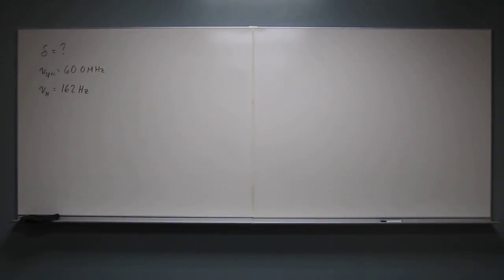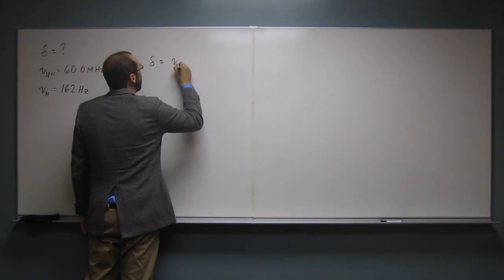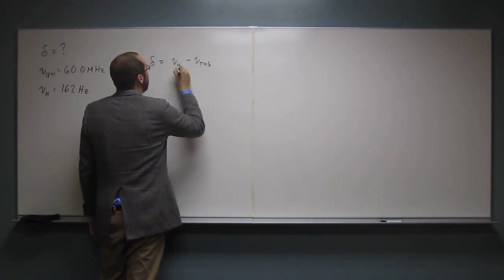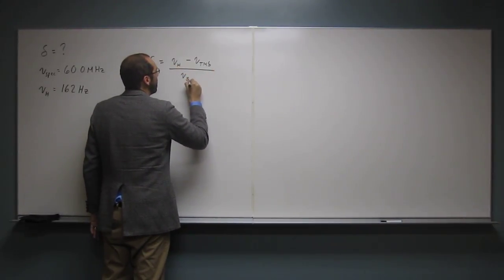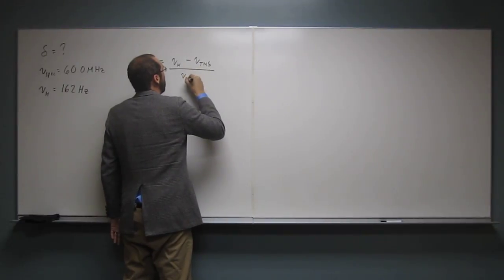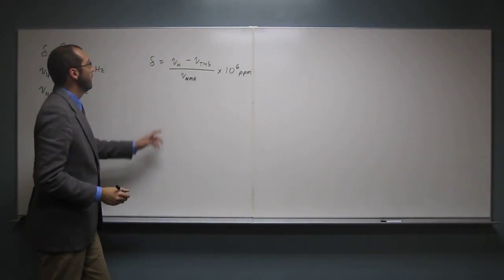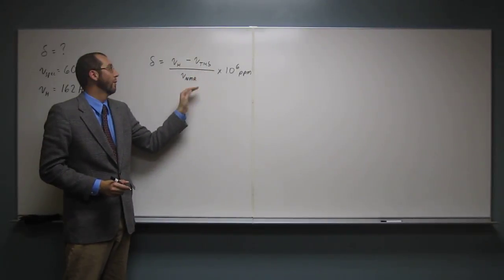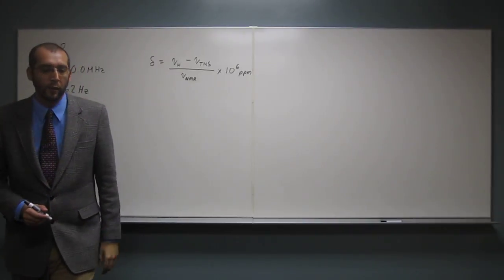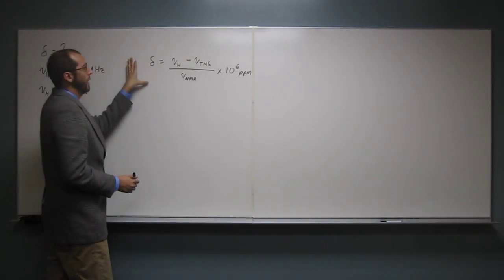So the way you need to do this, the first thing you need to do is remember the equation for figuring out PPM. So it's going to be delta equals the frequency of the hydrogen minus the frequency of TMS divided by the frequency of the spectrometer, the NMR, times 10 to the 6 PPM. So these all have to be in the same frequency unit. So if this is in megahertz and these are in hertz, we're going to have to convert one. But let's figure out what the delta value is first. So we've got the equation for it.